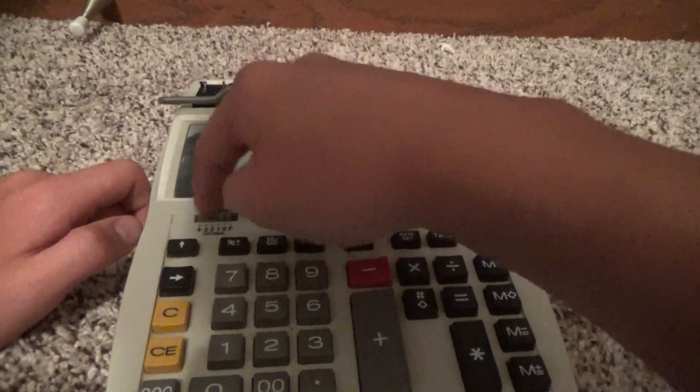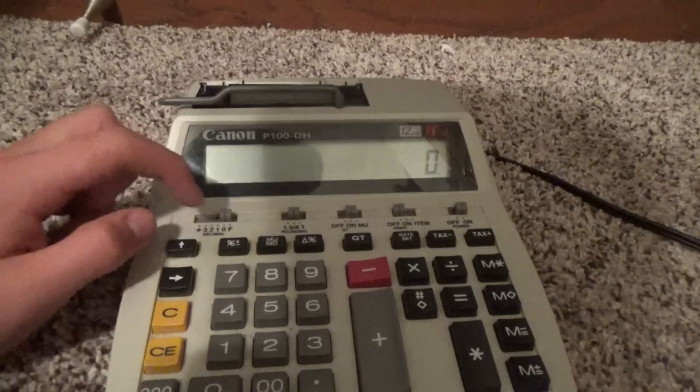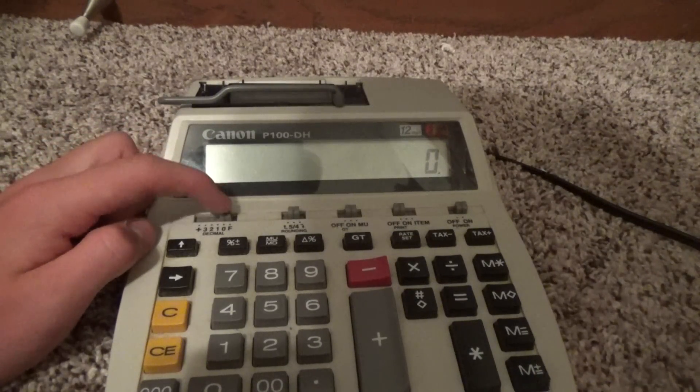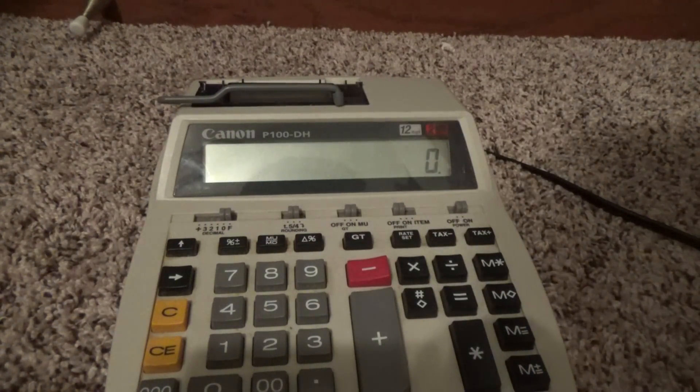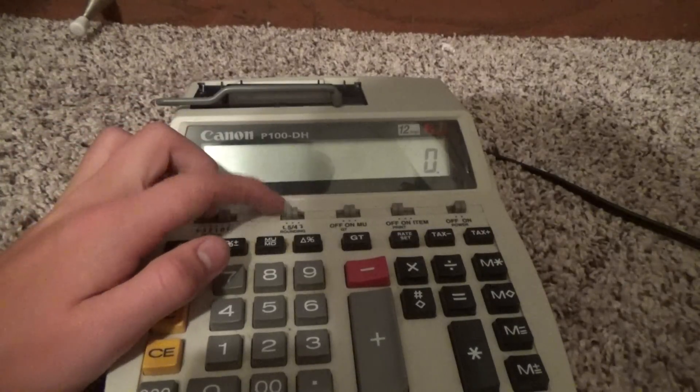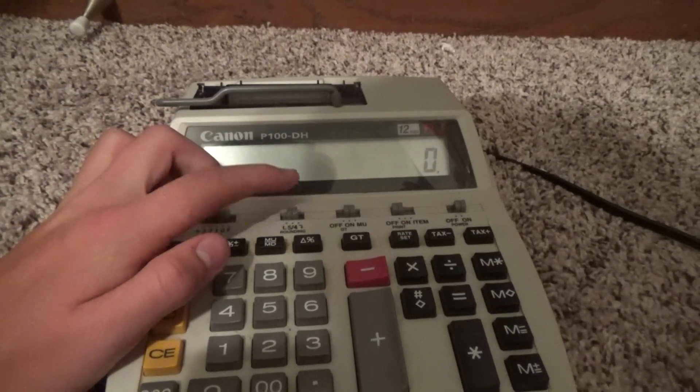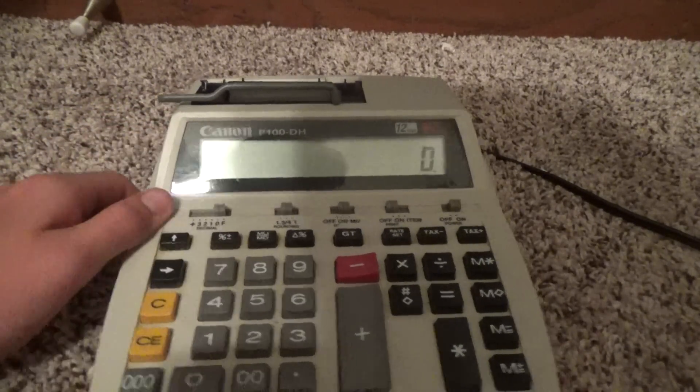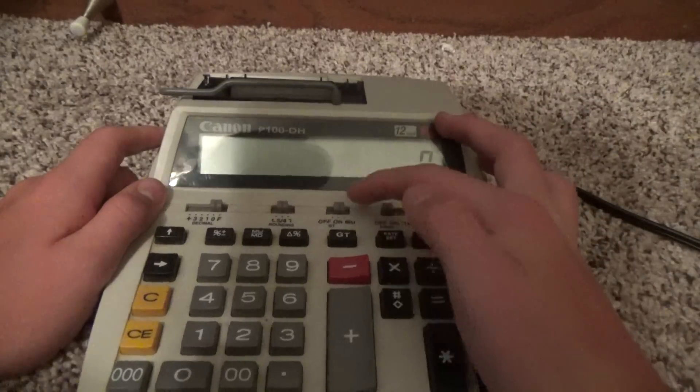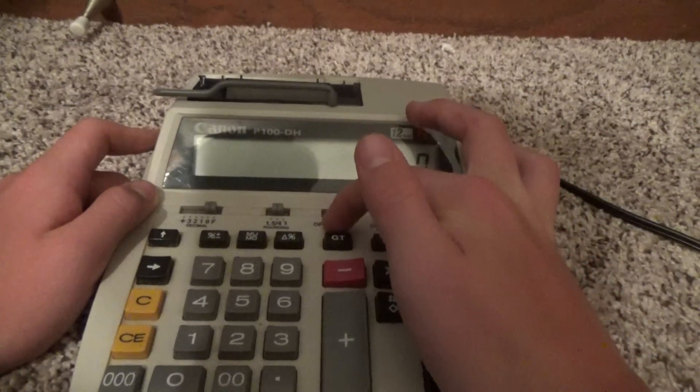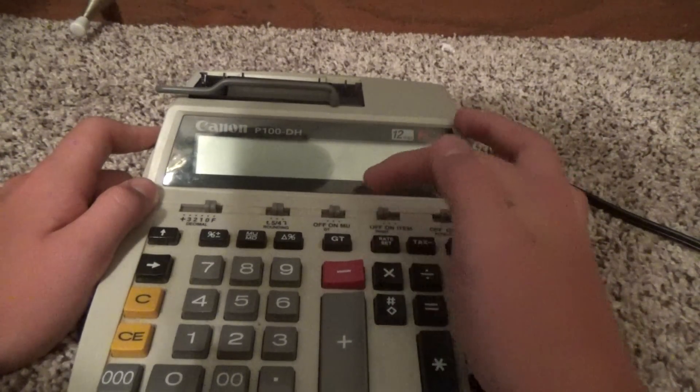Here we have our decimal display switches, so I can choose between 3, 2, 1, 0, or no decimals, and then I'm not sure what the F and plus button switches do yet. The 5 fourths thing has to do with the rounding, so you can either round up or round down. Here's where you can adjust the grand total, if you want grand total on or off.